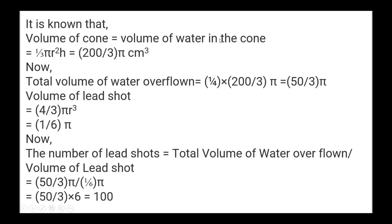Volume of cone = volume of water = (1/3)πr²h = (200/3)π cm³. Total volume of water overflowed = (1/4) × (200/3)π = (50/3)π. Volume of each lead shot = (4/3)πr³ = (1/6)π. Number of lead shots = (50/3)π ÷ (1/6)π = 50/3 × 6 = 100. So the number of lead shots is 100.